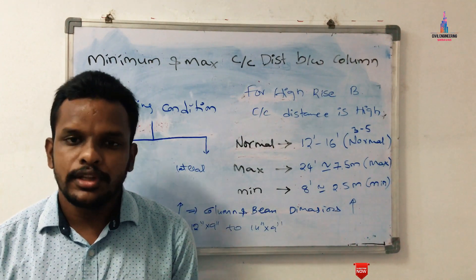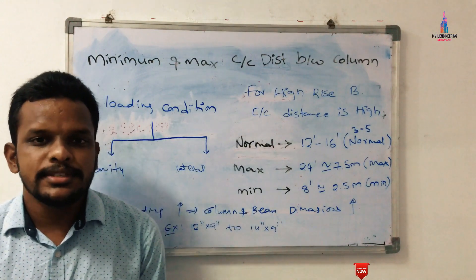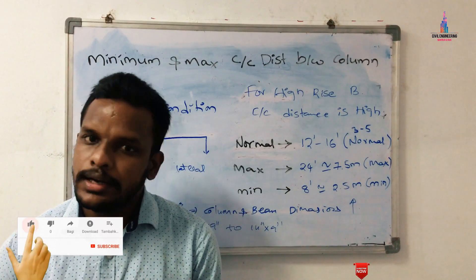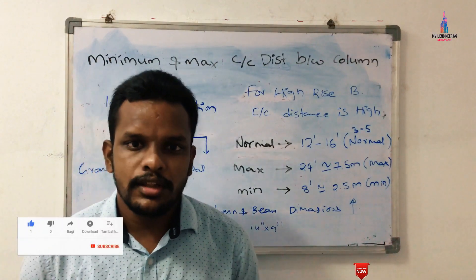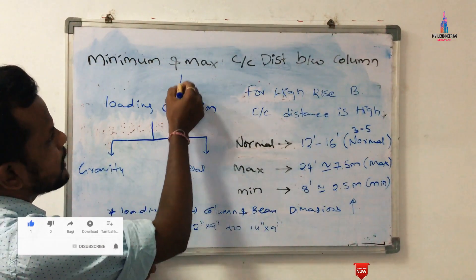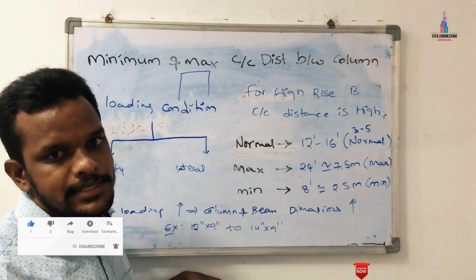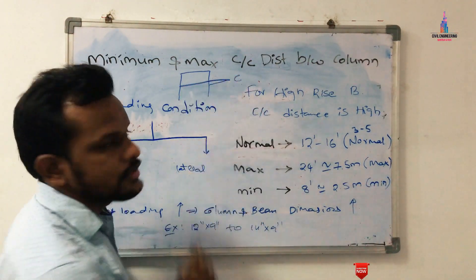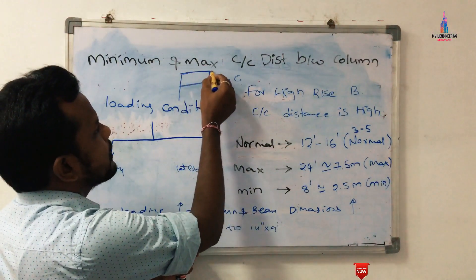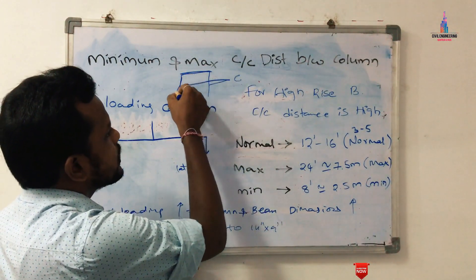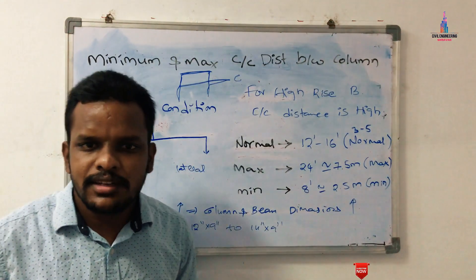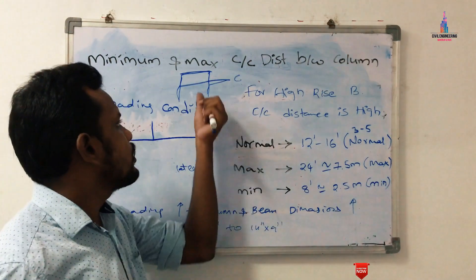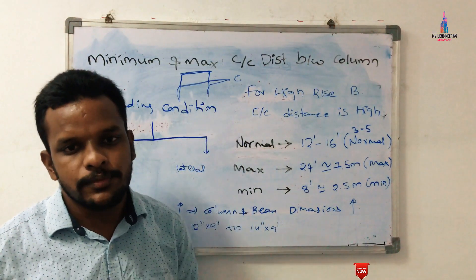A column is essentially the vertical member which supports the beam section in order to transfer the load from the horizontal member. The vertical section members we call column sections. Whatever load comes from the beam section is transferred to the vertical member, whether it is a lateral loading condition, gravity loading condition, or axial loading condition, and then transferred to the foundation section.